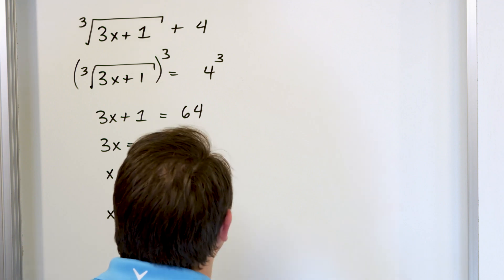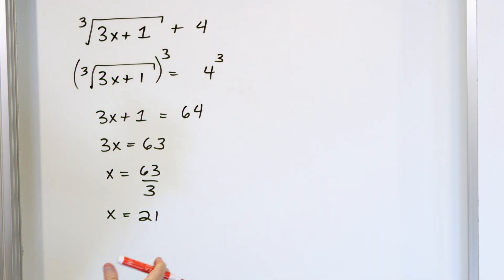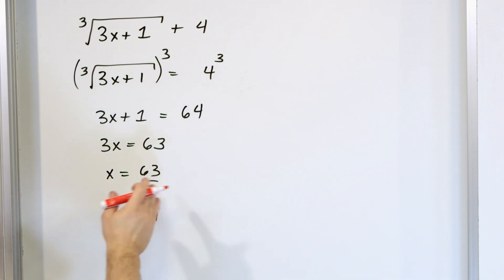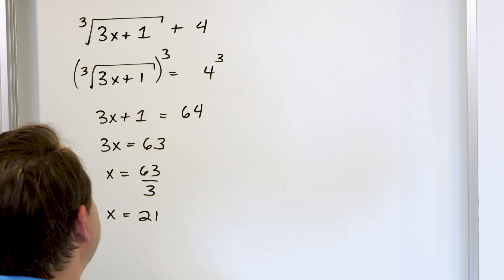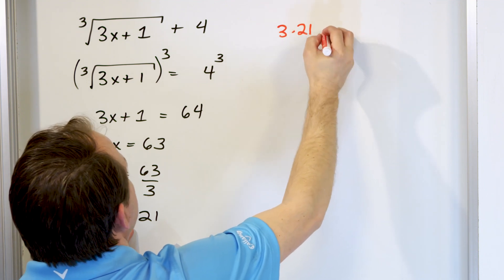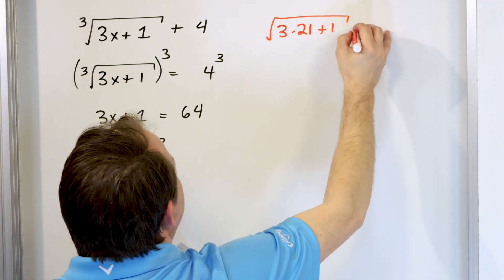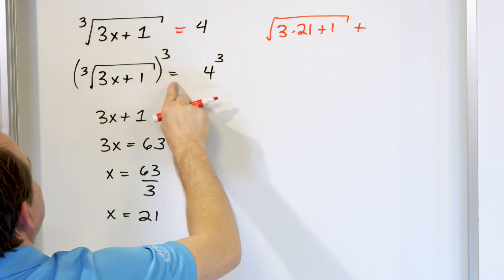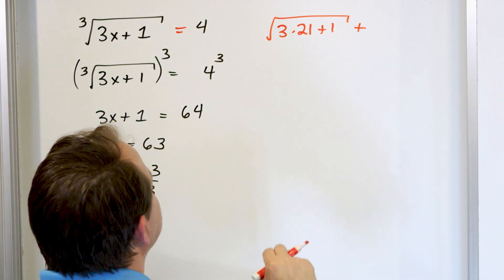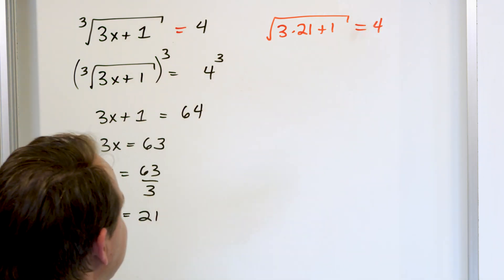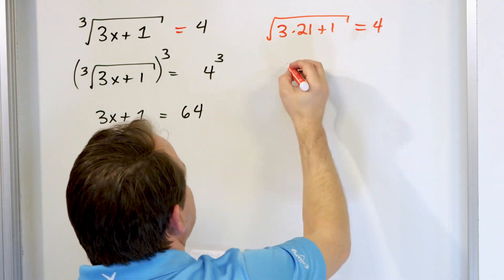But before we circle it, we always have to check and see if it's correct. When you get only one answer, in the vast majority of cases it will be the correct answer. It's just when you have multiple answers that you have to check them and worry about some of them not being correct. So this should be right, but let's check it anyway. We're going to put it in here: 3 times x being 21, plus 1, wrapped under a radical, should equal 4.